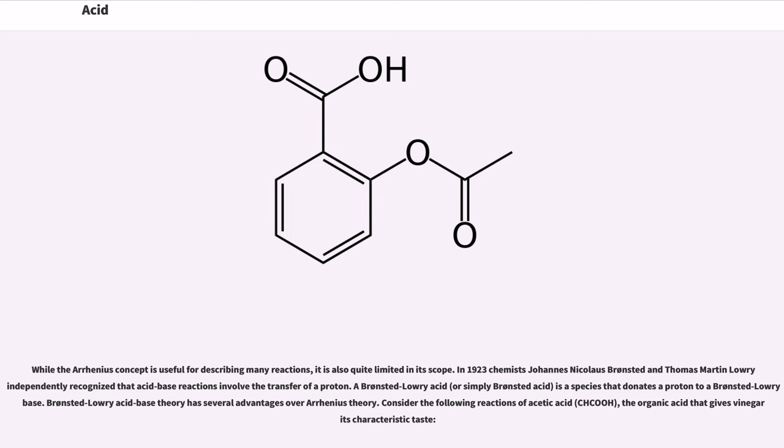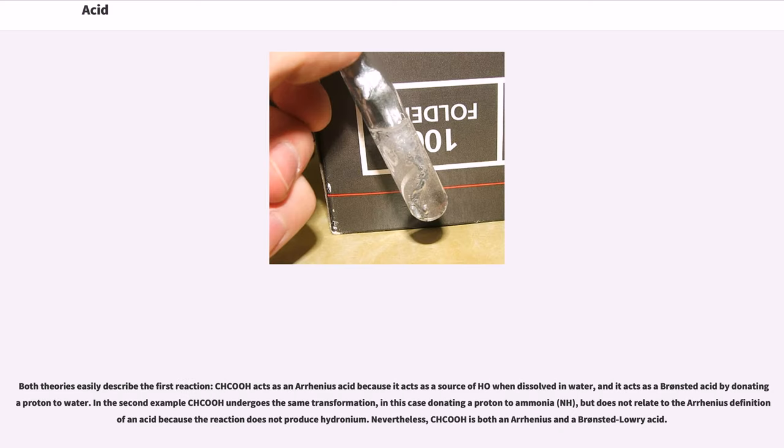A Brønsted-Lowry acid, or simply Brønsted acid, is a species that donates a proton to a Brønsted-Lowry base. Brønsted-Lowry acid-base theory has several advantages over Arrhenius theory. Consider the following reactions of acetic acid (CH3COOH), the organic acid that gives vinegar its characteristic taste. Both theories easily describe the first reaction: CH3COOH acts as an Arrhenius acid because it acts as a source of H+ when dissolved in water, and it acts as a Brønsted acid by donating a proton to water. In the second example, CH3COOH undergoes the same transformation, in this case donating a proton to ammonia (NH3), but does not relate to the Arrhenius definition of an acid because the reaction does not produce hydronium.